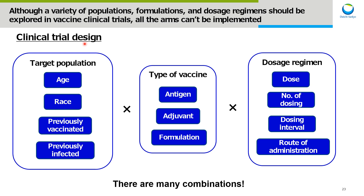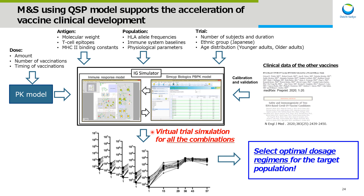In vaccine clinical trials, a variety of populations, types of vaccines, formulations, and dosage regimens should be explored. Since there are many combinations, it is impossible to implement all arms in the clinical trial. However, trial simulation for all combinations can be performed using the vaccine QSP model, and optimal dosage regimens for target populations can be predicted. Modeling and simulation using the QSP model optimizes study design and accelerates clinical development.